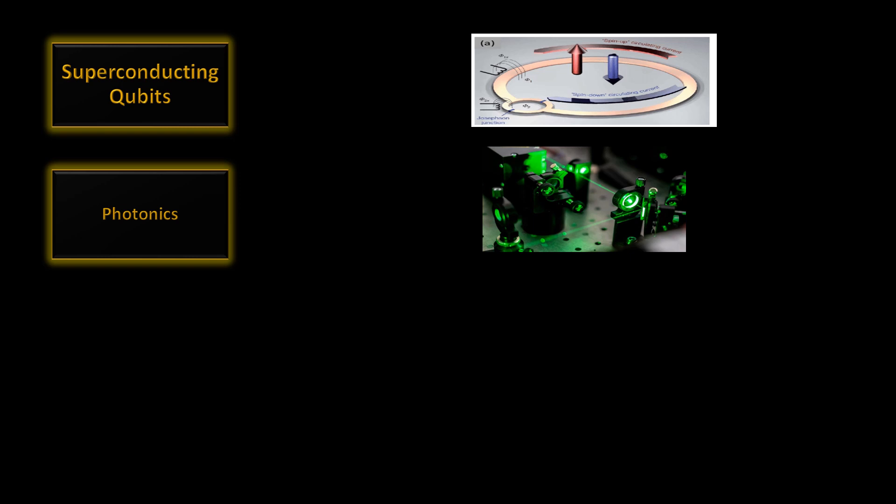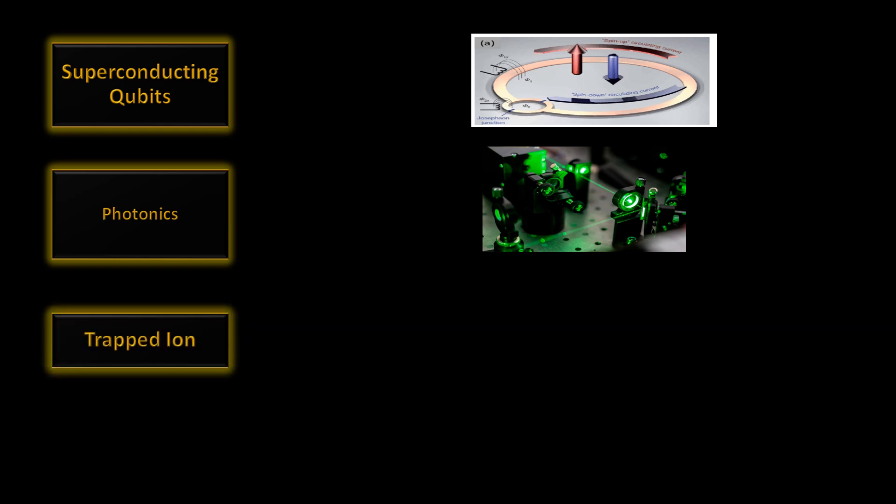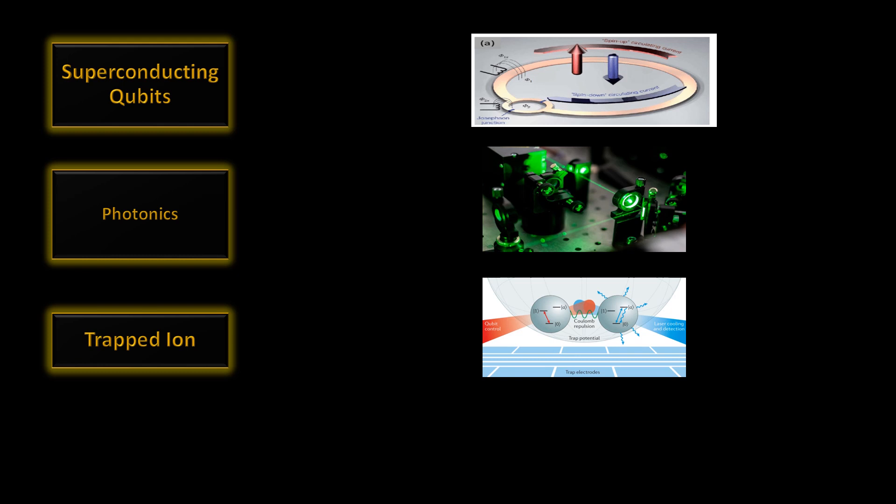So photonics seems really promising and all of us have some basic understanding of optics so photonics can be really explored by anyone. Then we have trapped ion method which is basically you take the atoms and then you ionize them with lasers and you trap them in electric potential to form a sort of a line of qubits.